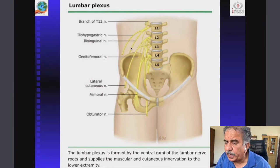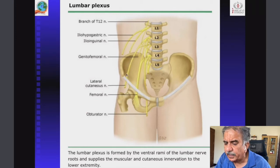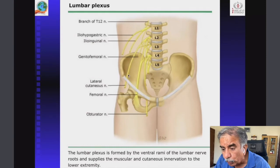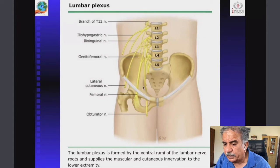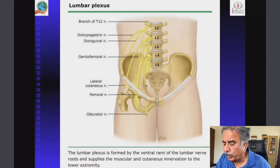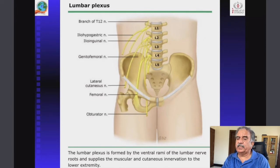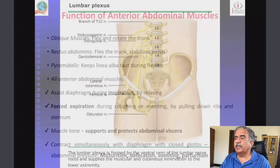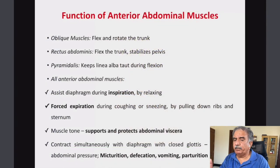During TEP or TAPP, one must know the location of the femoral cutaneous nerve, lateral femoral cutaneous nerve, and lateral femoral nerve. All nerve anatomy should be known to the surgeon for the best surgical outcome.